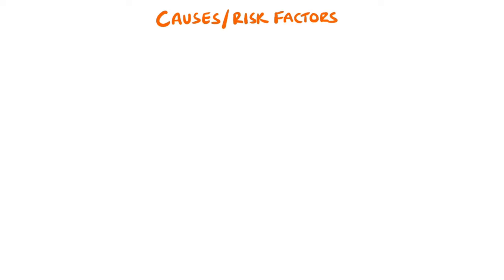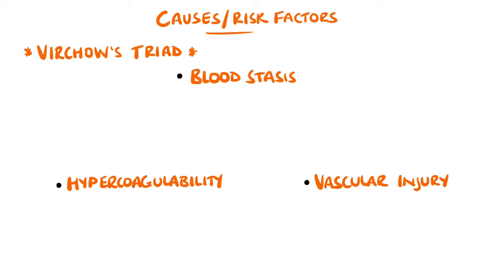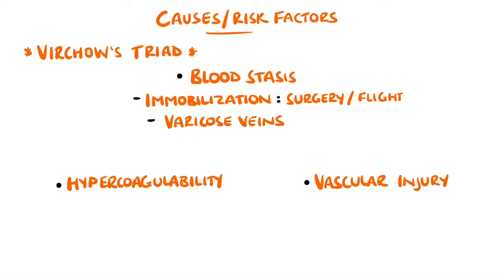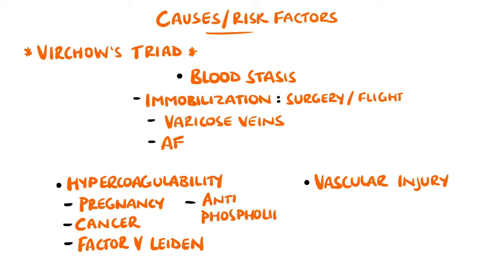The risk factors for venous thromboembolism are summed up in Virchow's triad. They include blood stasis, hypercoagulability, and vascular injury. Blood stasis can come from immobilisation following surgery or a long flight, and varicose veins can also lead to blood stasis. Atrial fibrillation is also an example but is unlikely to cause a pulmonary embolism unless there is a direct connection between the left and right sides of the heart. Hypercoagulable states include pregnancy, cancer, genetic conditions like factor V Leiden, acquired thrombophilia like antiphospholipid syndrome, and use of oestrogens such as hormone replacement therapy and contraceptives.